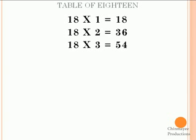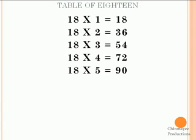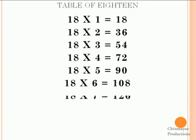18 3s are 54, 18 4s are 72, 18 5s are 90, 18 6s are 108, 18 7s are 126.